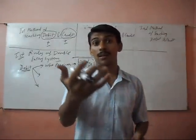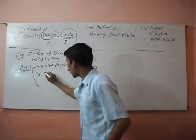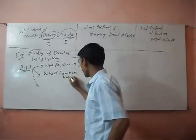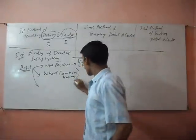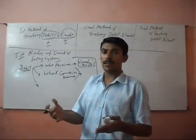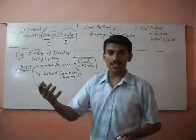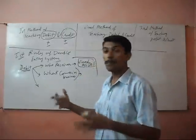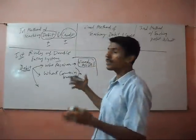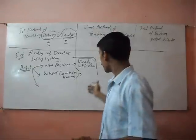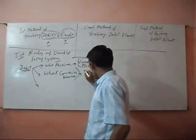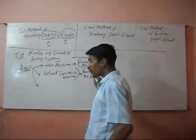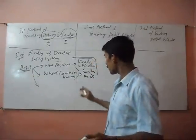Now, what comes into the business? What comes in the business is cash, furniture, building — anything which comes into the business is debit. Suppose the business buys furniture — what comes into the business? A debit.